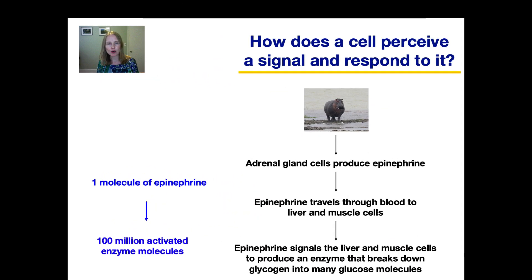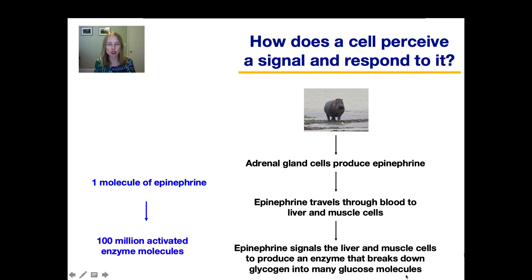Here's an example of signal amplification in a specific pathway. Going back to our angry hippo example, seeing that angry hippo causes your adrenal glands to produce the hormone epinephrine, which then goes through a signal transduction pathway to signal your liver and muscle cells to produce an enzyme that breaks down glycogen into glucose. The binding of a single molecule of epinephrine to its receptor can eventually lead to the activation of 100 million enzyme molecules. That's some serious amplification.